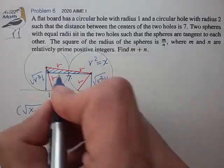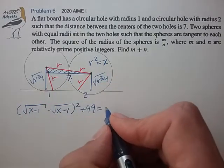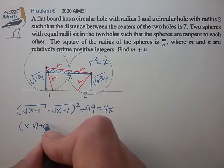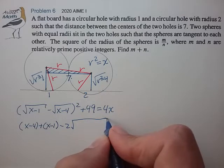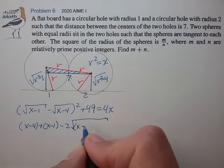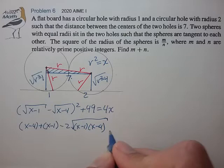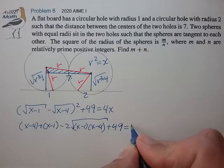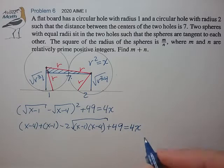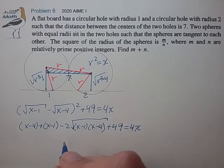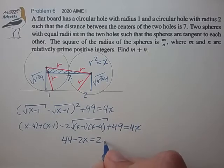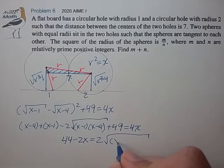So let's expand this. We get x minus 1 plus x minus 4 minus 2 square root of x minus 1 times x minus 4, plus 49 is equal to 4x. Let's move things around to find that 44 minus 2x is equal to 2 square root of x minus 1 times x minus 4.